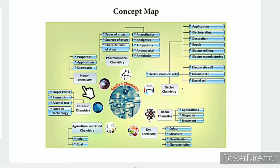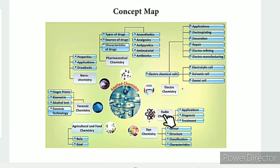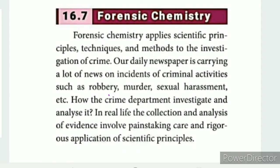In those parts, we have seen how chemistry is applied in 7 various fields for the benefit of people. Part 1 covered nanochemistry, Part 2 pharmaceutical chemistry, Part 3 electrochemistry, Part 4 radiochemistry, Part 5 dye chemistry, and Part 6 agricultural and food chemistry — all of these we have already seen. Today, the last topic is forensic chemistry.